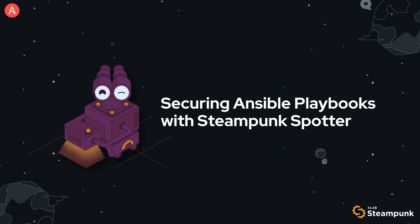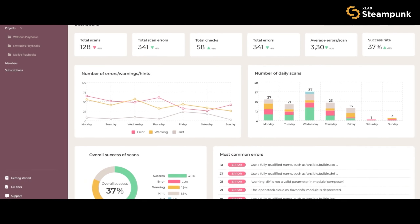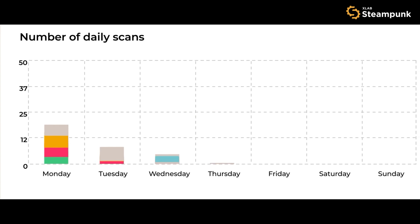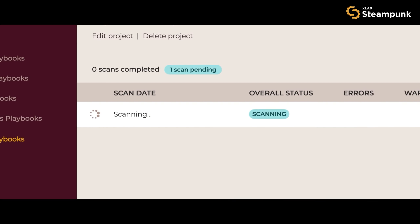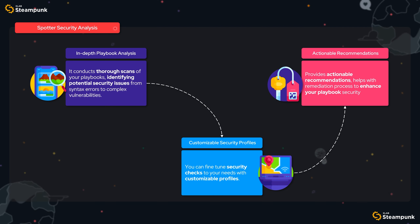Steampunk Spotter provides a comprehensive solution, offering full control over your Playbook security with an easy-to-use interface. It conducts thorough scans of your Playbook, identifying potential security issues from syntax errors to complex vulnerabilities. Spotter also provides actionable recommendations — it doesn't just identify problems, it guides you through the remediation process to enhance your Playbook security.